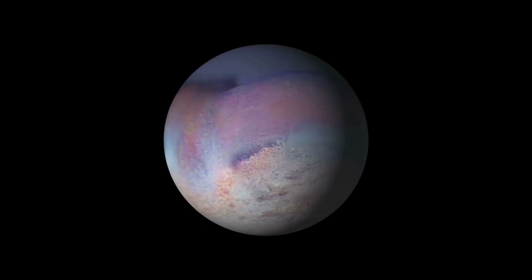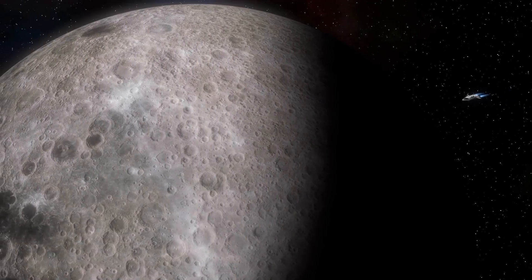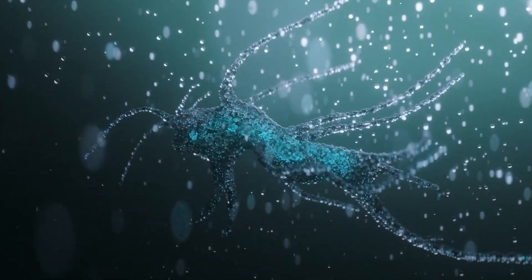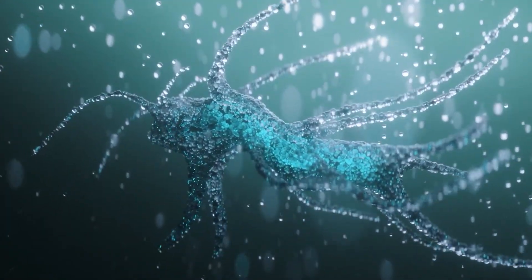Additionally, scientists believe that Triton might have a subsurface ocean of liquid water, possibly heated by tidal forces. It also has a temperature of about 390 degrees Fahrenheit. These features could offer benefits to potential life forms, with the atmosphere potentially protecting from radiation and meteorites, while the ocean could have hydrothermal vents serving as an energy and nutrient source.